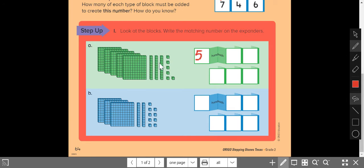1, 2, 3 tens. 1, 2, 3, 4, 5, 6 ones. And then they want me to write it again down here with the expander closed all the way. So 5, 3, 6.